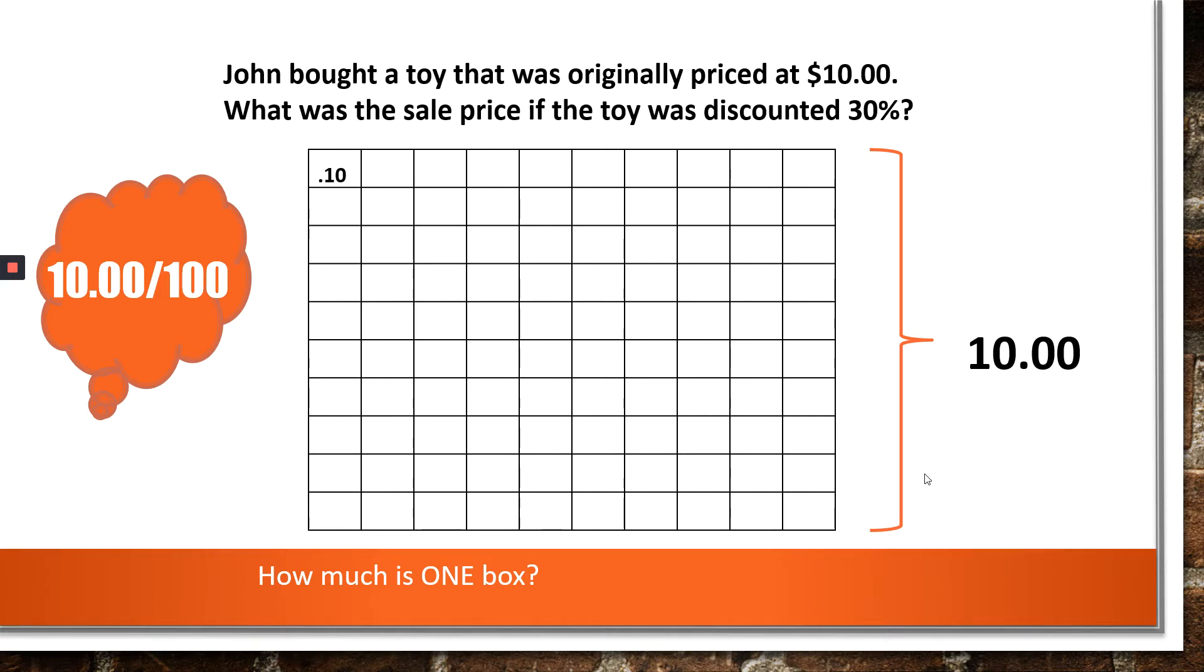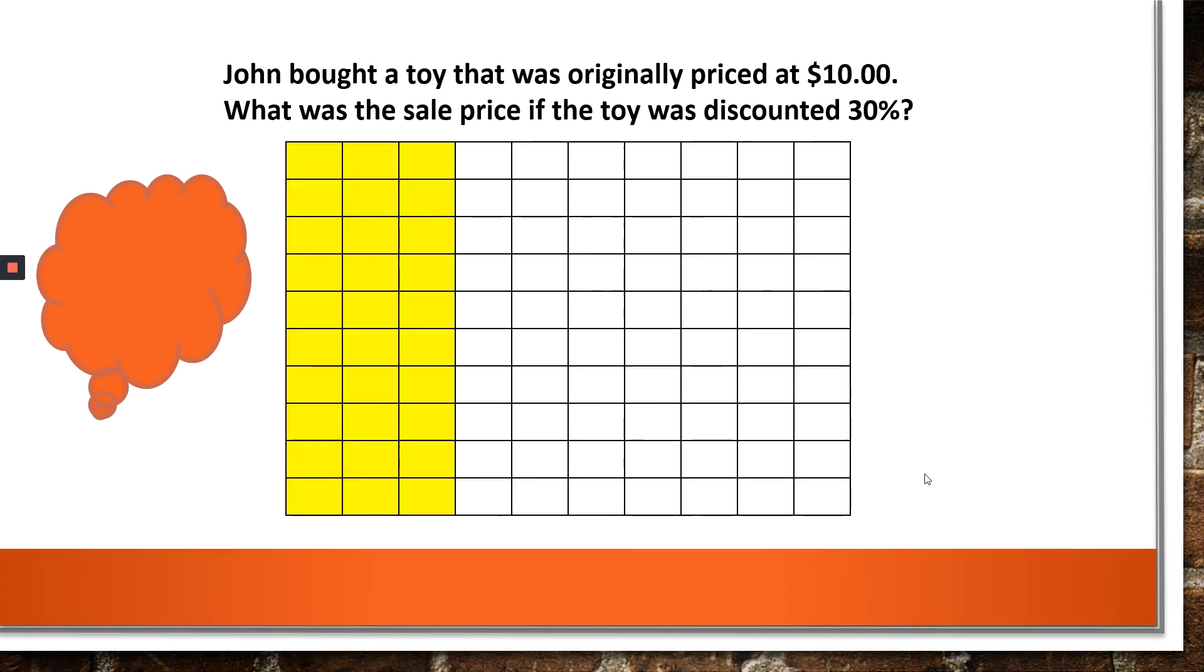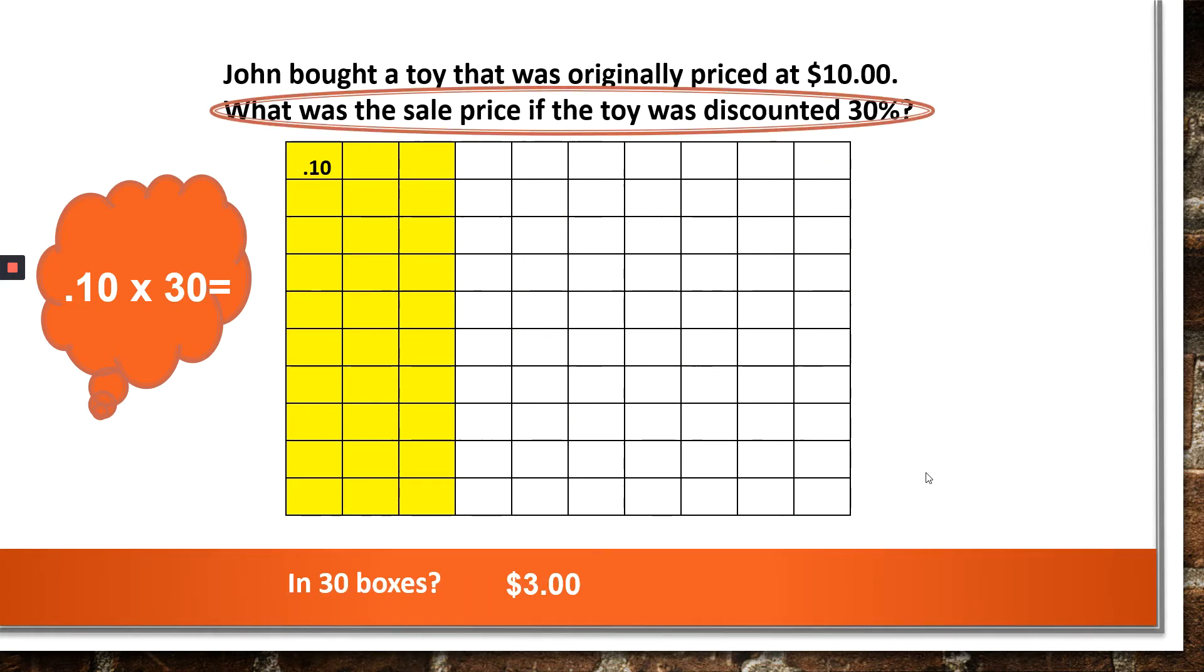Now it says that it was discounted 30 percent. Well, discount means to take it off. It's going to be a sale, right? You don't want it to be more. So let's look at that. Here's 30 percent. And we said there's 10 cents in every box. So how much is in 30 boxes? Well, if you use your calculator, 10 cents times 30 will give you, you got it, $3. But when I look back at the question, it says, what was the sale price? We just calculated the discount.